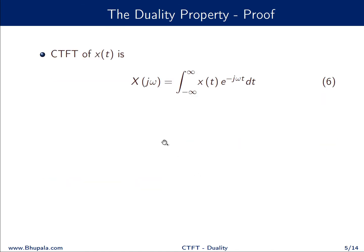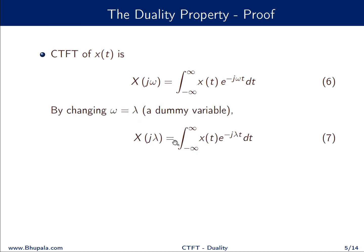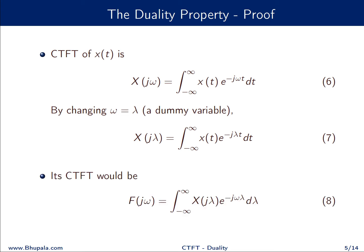Let us try to prove this property. We start with the definition of the Fourier transform. For the sake of clarity, we will replace the dummy variable ω with λ, so X(jλ) equals the integral from minus infinity to infinity of x(t) e^(−jλt) dt, which is the same as the definition of the Fourier transform but with λ instead of ω. We will soon understand why we have done this.